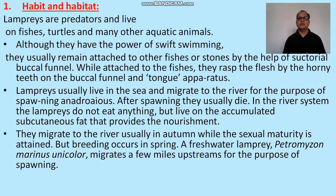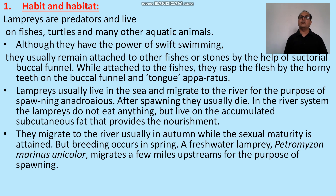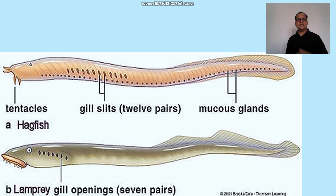The lamprey does not eat anything but lives on accumulated subcutaneous fat that provides nourishment during migration. They migrate to the river usually in autumn when sexual maturity is attained, but breeding occurs in spring. The freshwater lamprey, Petromyzon marinus unicolor, migrates a few miles upstream for spawning. This is Petromyzon, and this is the hagfish — both are cyclostomes.